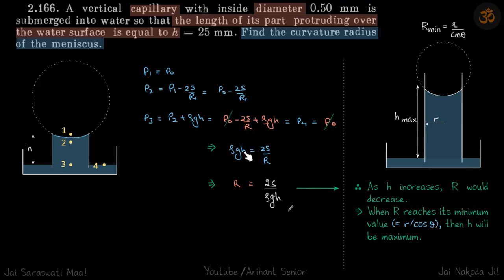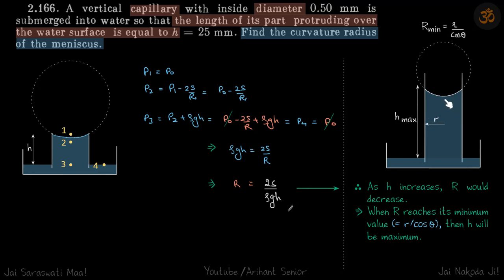Compare this with our standard equation: small h equals 2s divided by ρgr. From this formula, as small h increases — when you give the capillary more length to rise — R is going to be smaller. So if the height is less, R is larger, and when the height is more, R is smaller. You can see in the diagram that with more length of capillary, the circle is smaller, and with less, the circle is bigger.